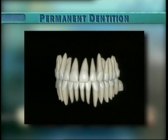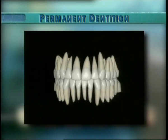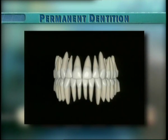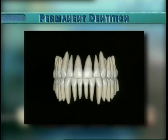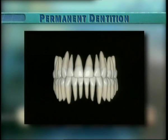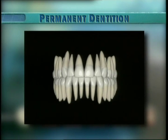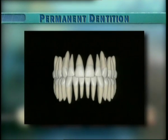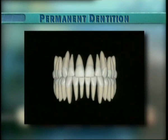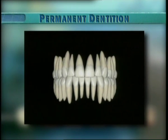The permanent molars, which have no predecessors, subsequently emerge with an interval of about six years. Growth of the jaws posteriorly provides the space needed for them to form, erupt, and attain a good position in the dental arch.